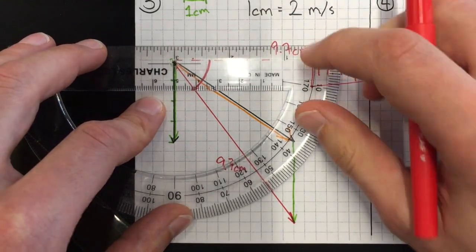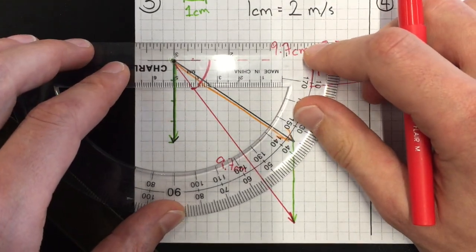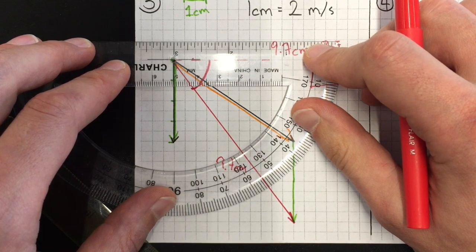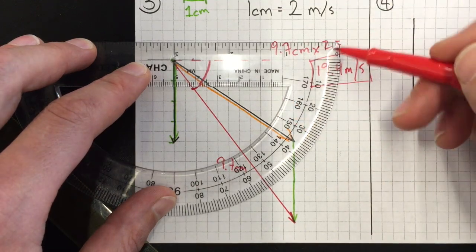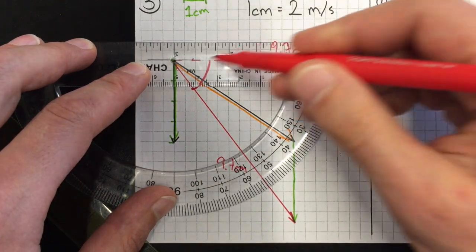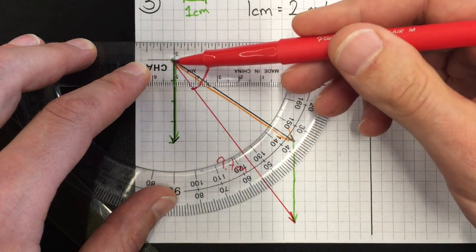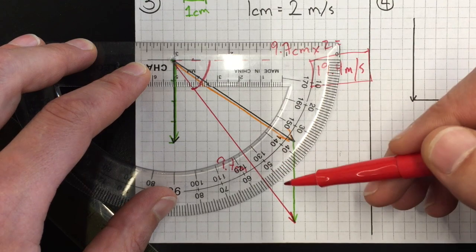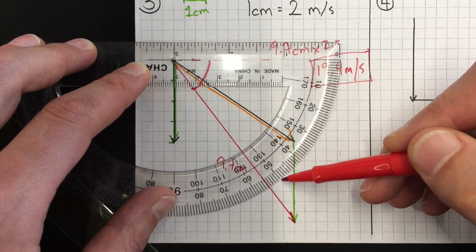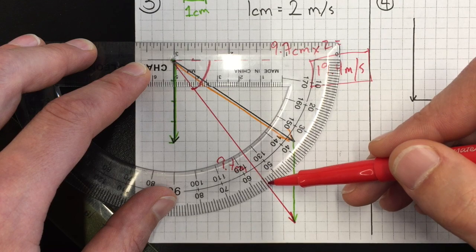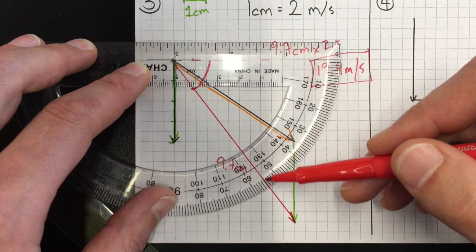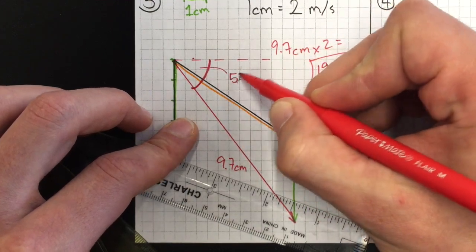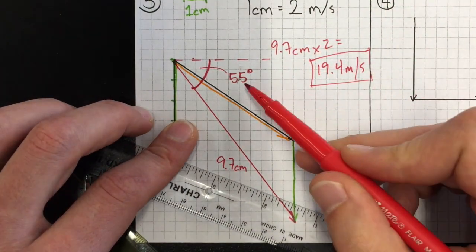So we put the point of our protractor right at the vertex, and I'm just checking over here to make sure zero is still on that same horizontal line. And then we're gonna look at where our vector crosses our protractor. And this crosses almost exactly at 55. It looks like maybe just a little bit less, but I'm gonna go with 55 here, maybe just under 55. So this is 55 degrees, and so now I have my angle and my magnitude of my resultant vector.